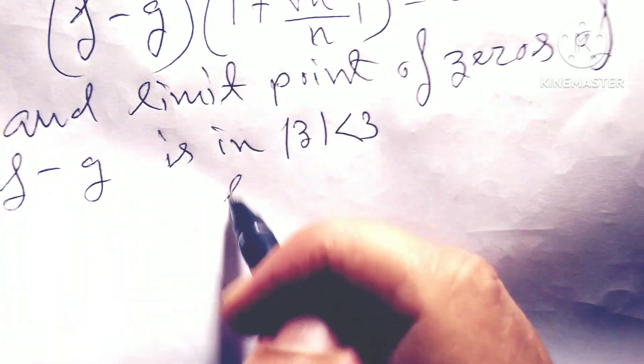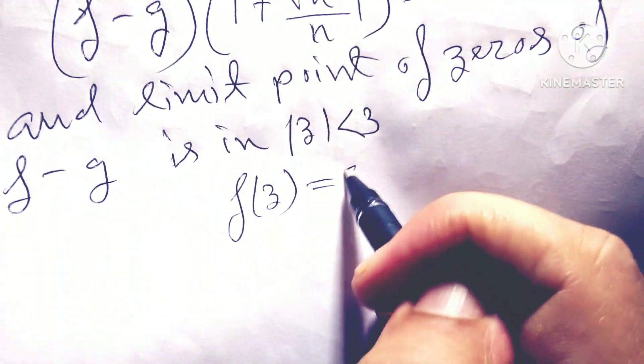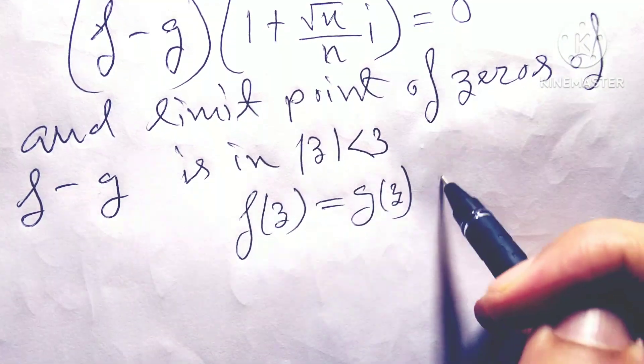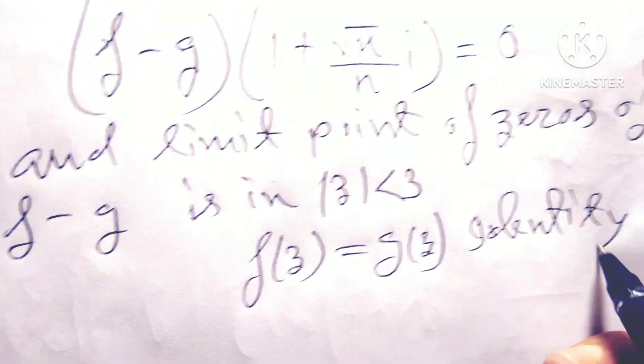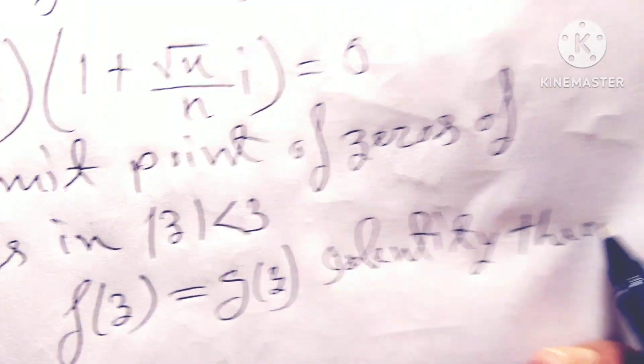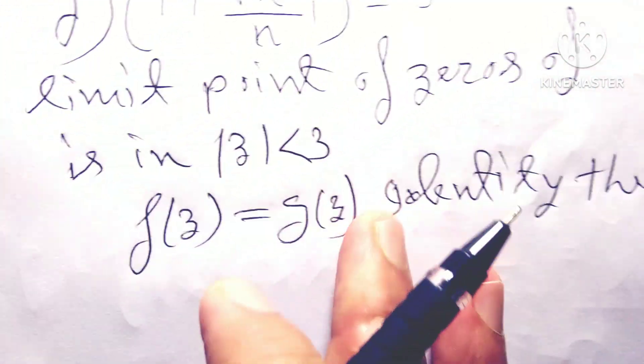So by identity theory, f(z) equals g(z) by identity theory.